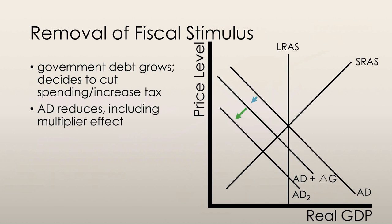When the government becomes concerned about its growing debt, it may choose to raise taxes or reduce spending. In this situation, the exact opposite process takes place — aggregate demand reduces by the amount of the change in spending and the multiplier effect that occurs as a result of a decrease in incomes and consumption. The economy will theoretically return to its previous position, creating a recessionary gap.